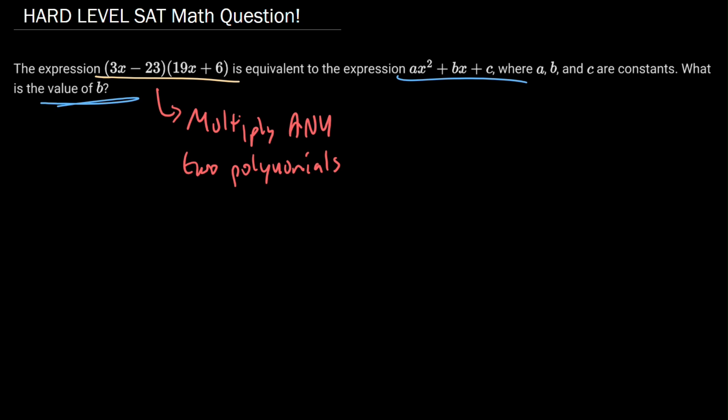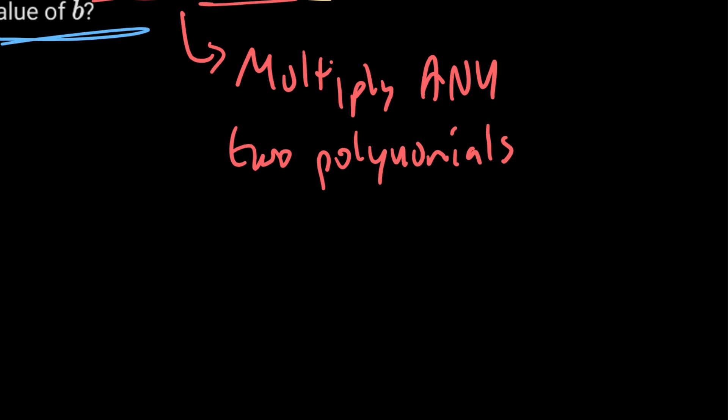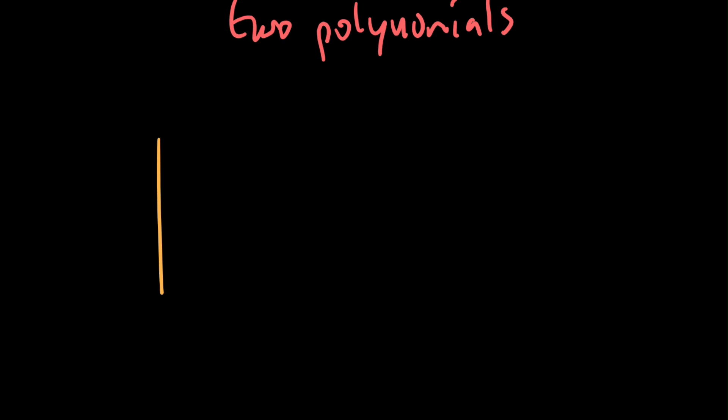When we have two polynomials—that's basically just saying we have one function multiplied by another function, and there's nothing crazy like exponentials or anything else going on—we can multiply any two polynomials using the box method. I'm going to show you that method really quickly here.